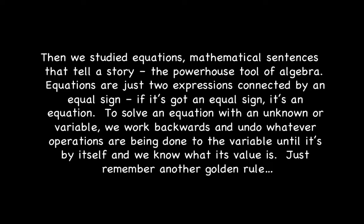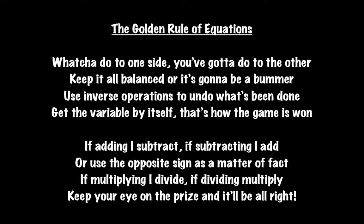Then we study equations — mathematical sentences to tell a story, the powerhouse tool of algebra. Equations are just two expressions connected by an equal sign. To solve an equation with an unknown or variable, we walk backwards and undo whatever operations are being done to the variable until it's by itself. The golden rule of equations: what you do to one side, you've got to do to the other. Keep it all balanced or it's gonna be a bummer. Use inverse operations to undo what's been done. Get the variable by itself — that's how the game is won. If adding I subtract, if subtracting I add, use the opposite sign. Multiplying I divide, if dividing multiply — keep your eye on the prize and it'll be alright.